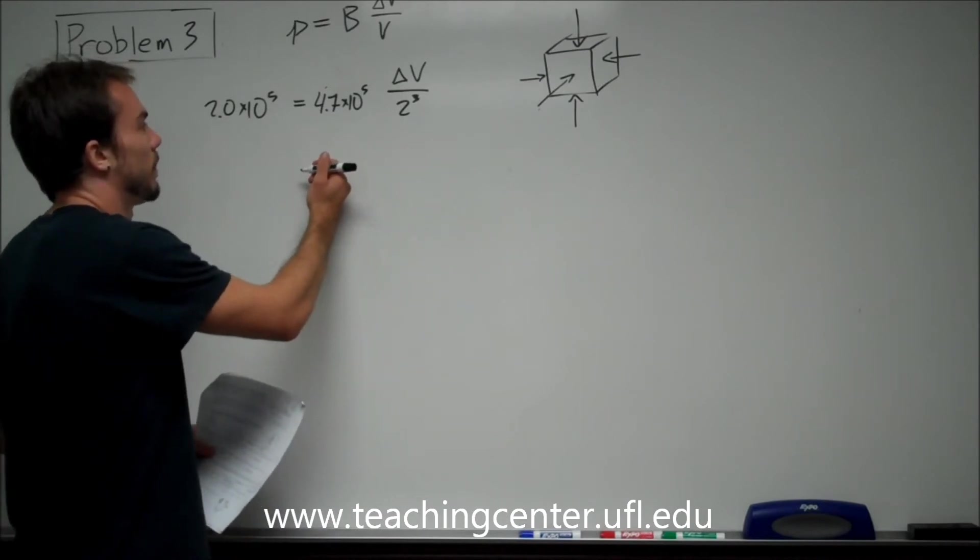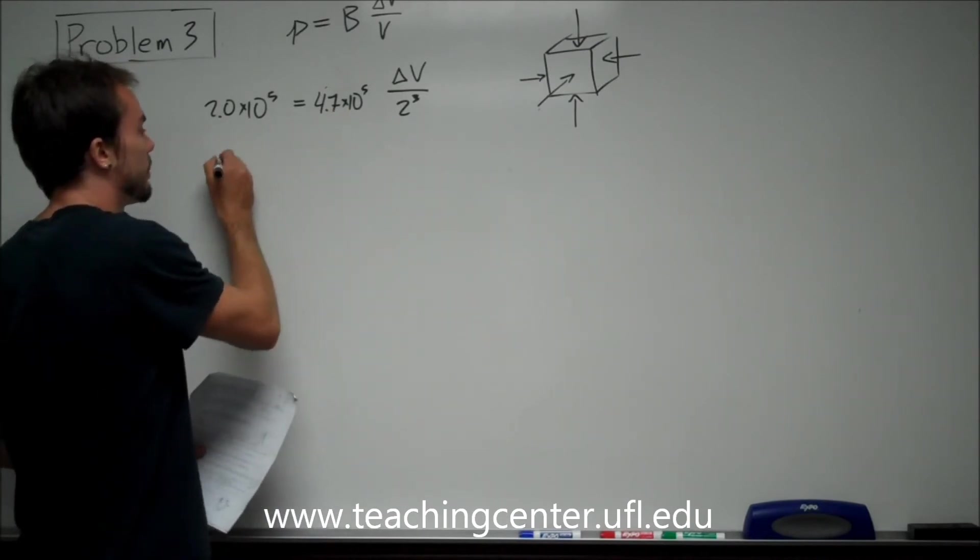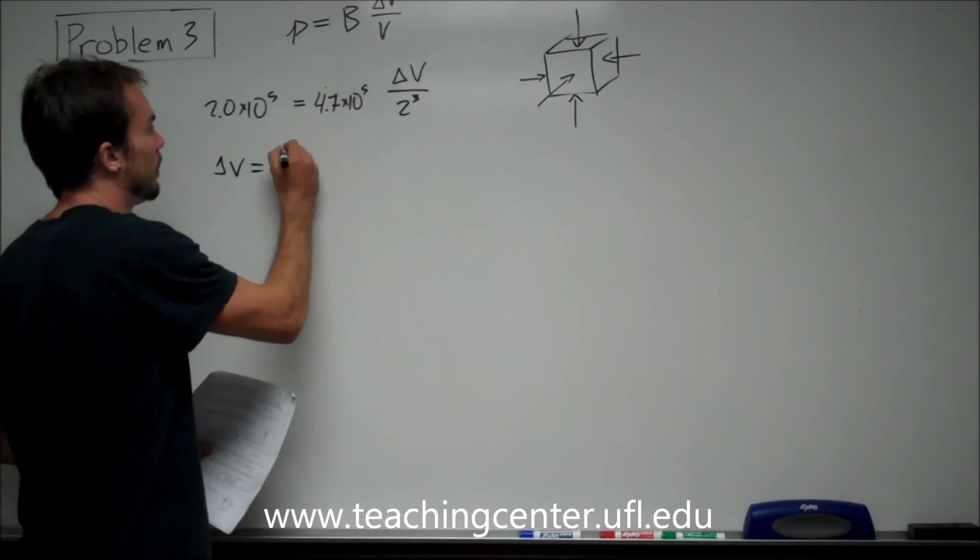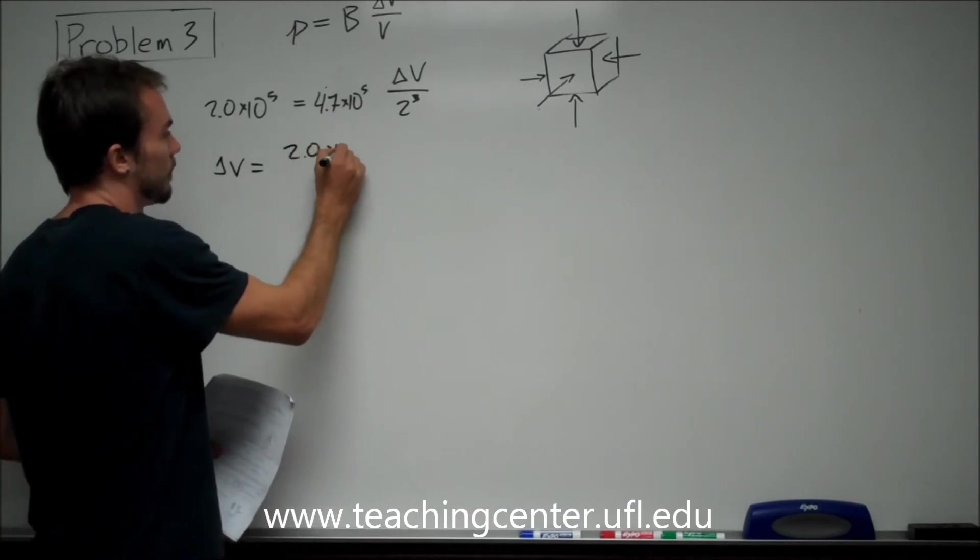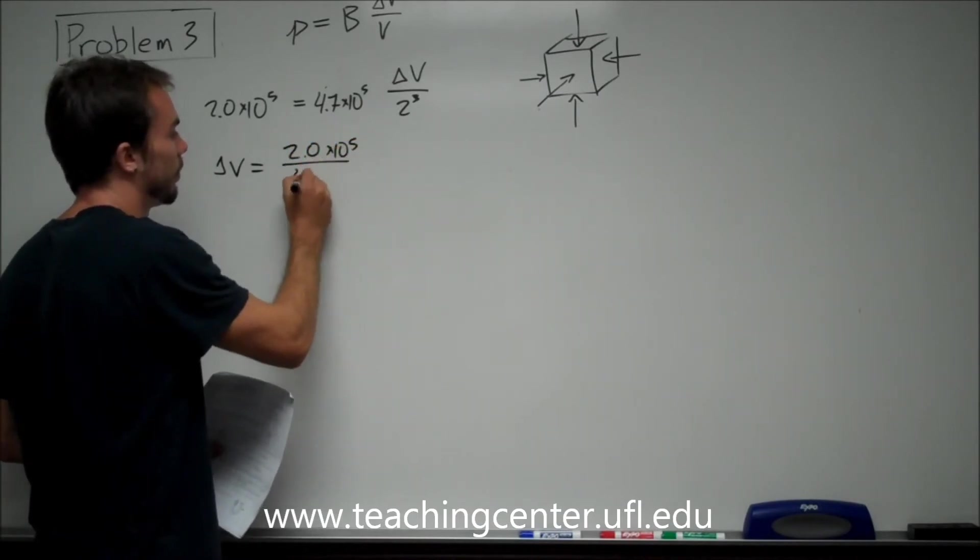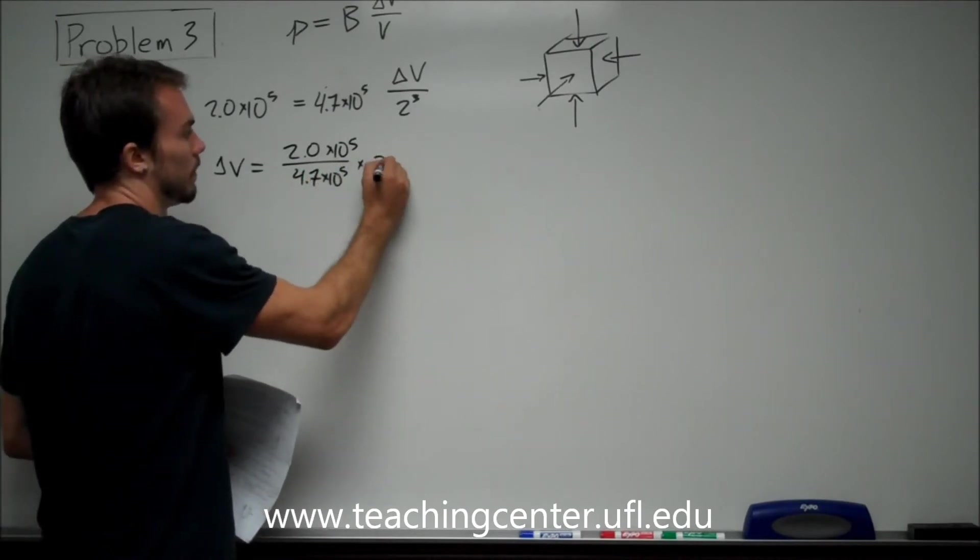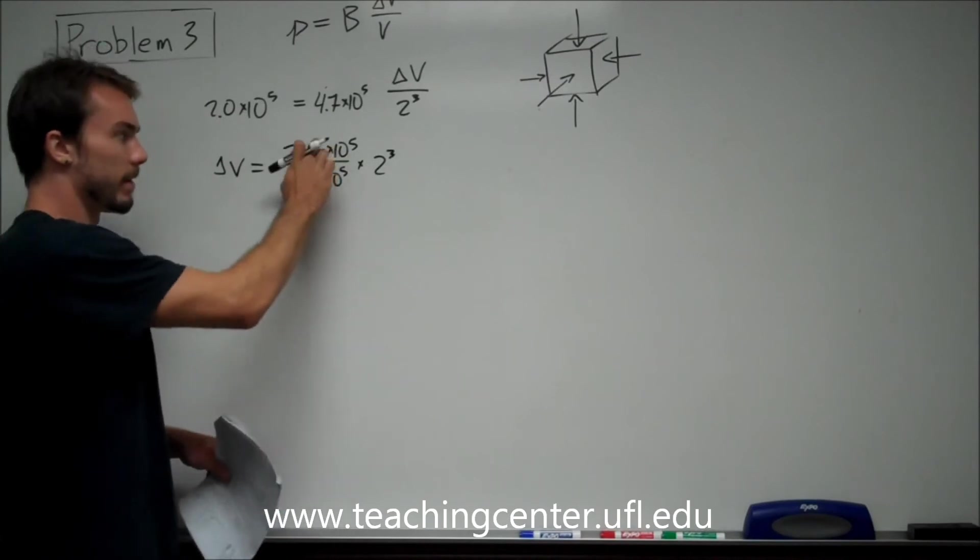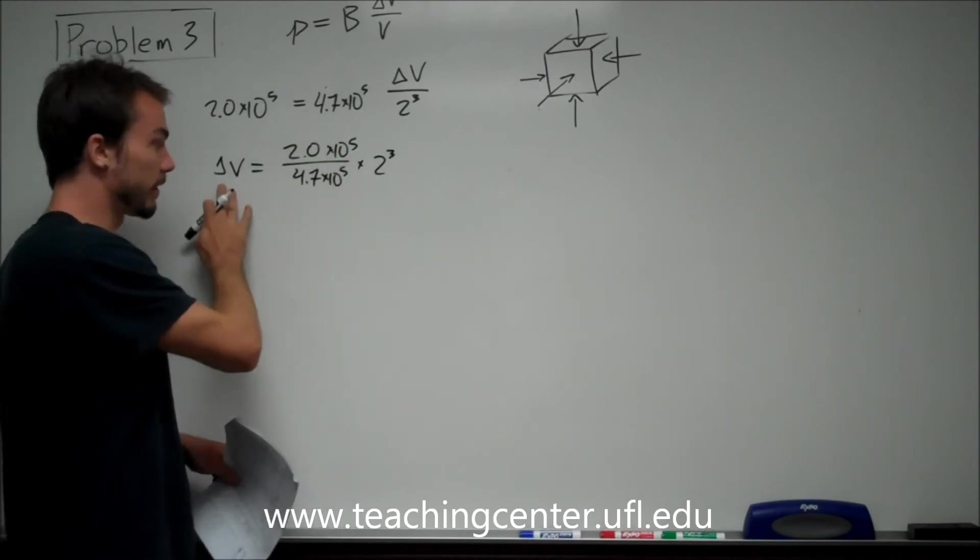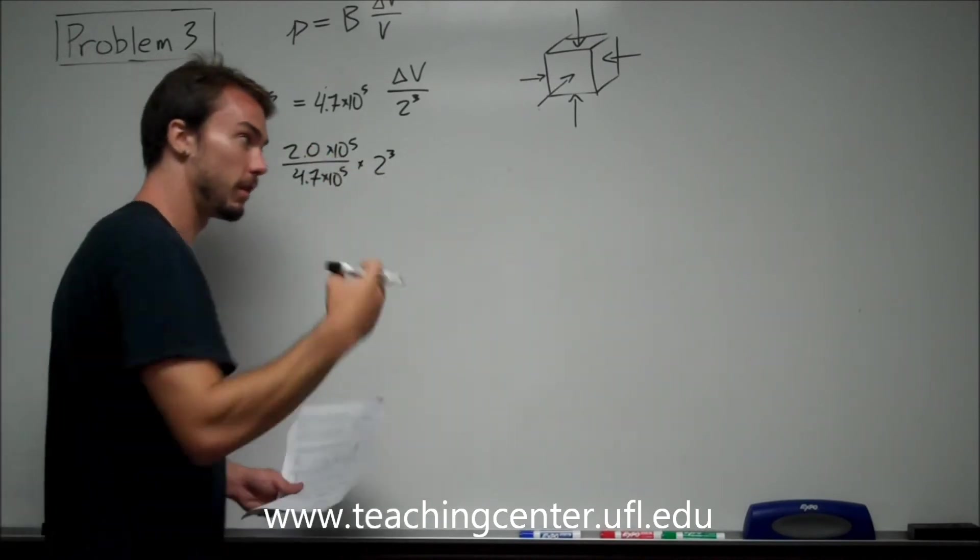So with that in mind, basically we're going to be left with our change in volume to be 2.0 times 10 to the fifth, divided by 4.7 times 10 to the fifth, times 2 cubed. Which, by the way, these units would cancel out, so we're going to left with our change in volume in centimeters cubed.